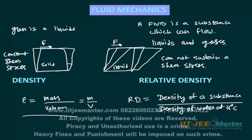One thing we can see clearly: the density of water also changes with temperature, and so does the density of other substances. The density of any substance can be taken at any temperature, but the density of water is taken as standard at 4 degrees centigrade. We compare the density of any substance at any temperature with this standard. Relative density is also called specific gravity — RD is basically specific gravity.